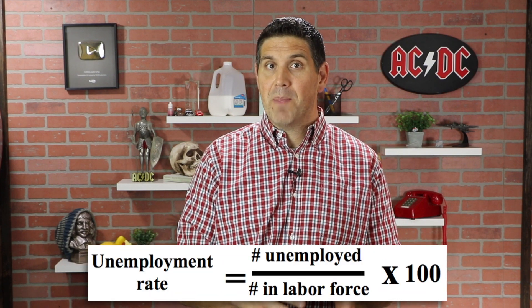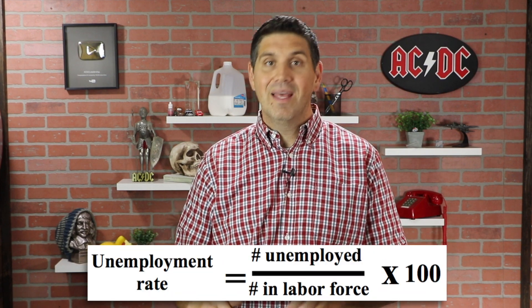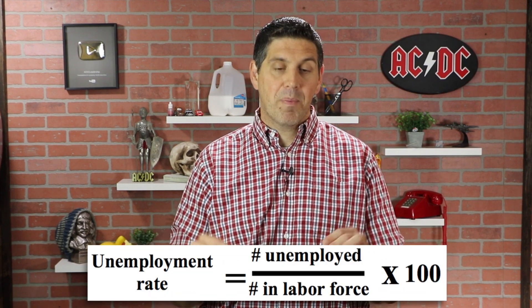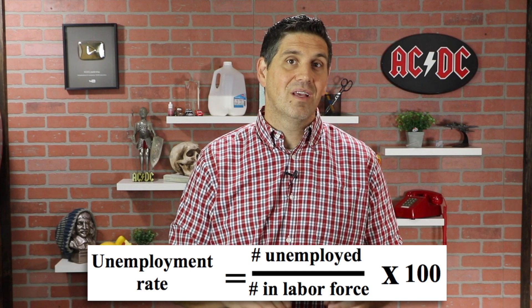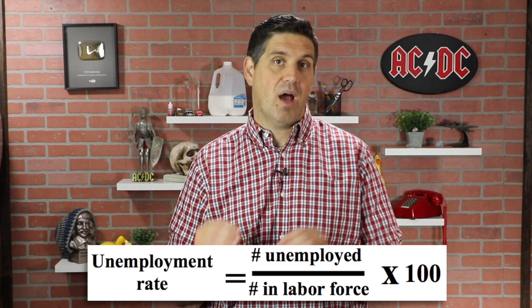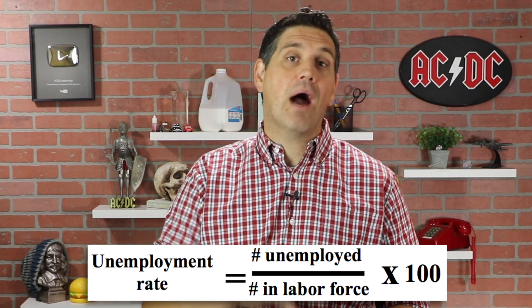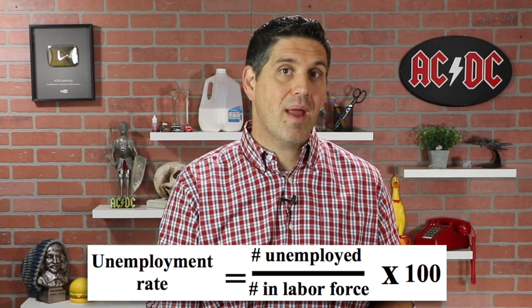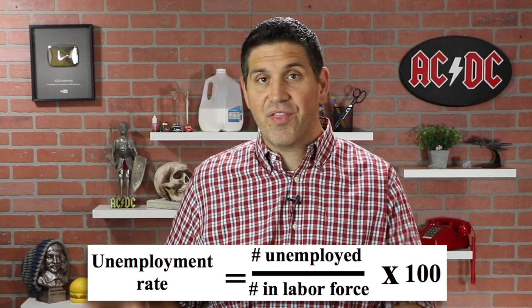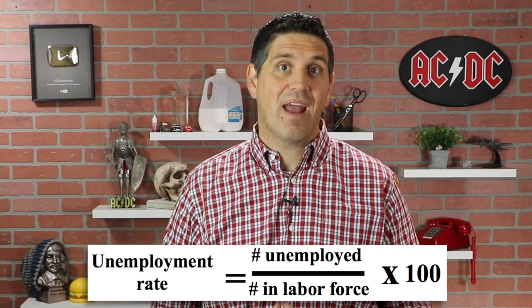The equation for the unemployment rate is the number of people who are unemployed divided by the number of people in the labor force, times 100. In your class, you've got to feel comfortable calculating the unemployment rate, but there's a bunch of other things that you've got to know.